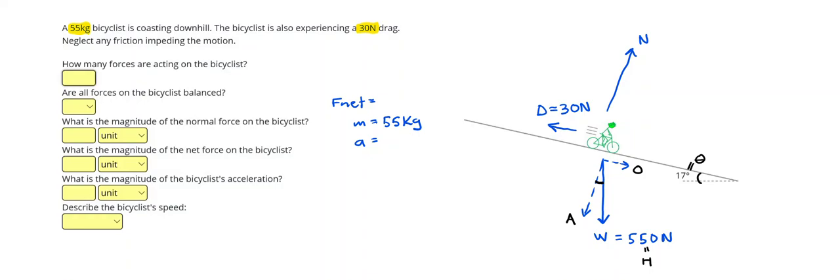So to find the adjacent side, I can do h cosine theta. And if I plug that in, I get 526 N. And plugging in h sine theta to find the opposite side, I get 161 N.